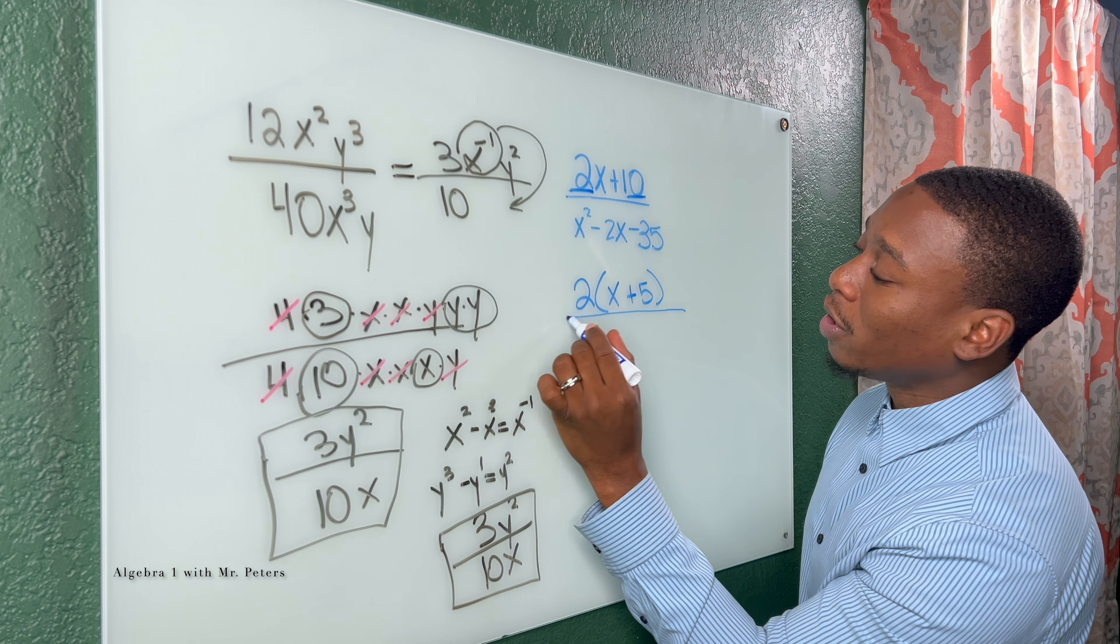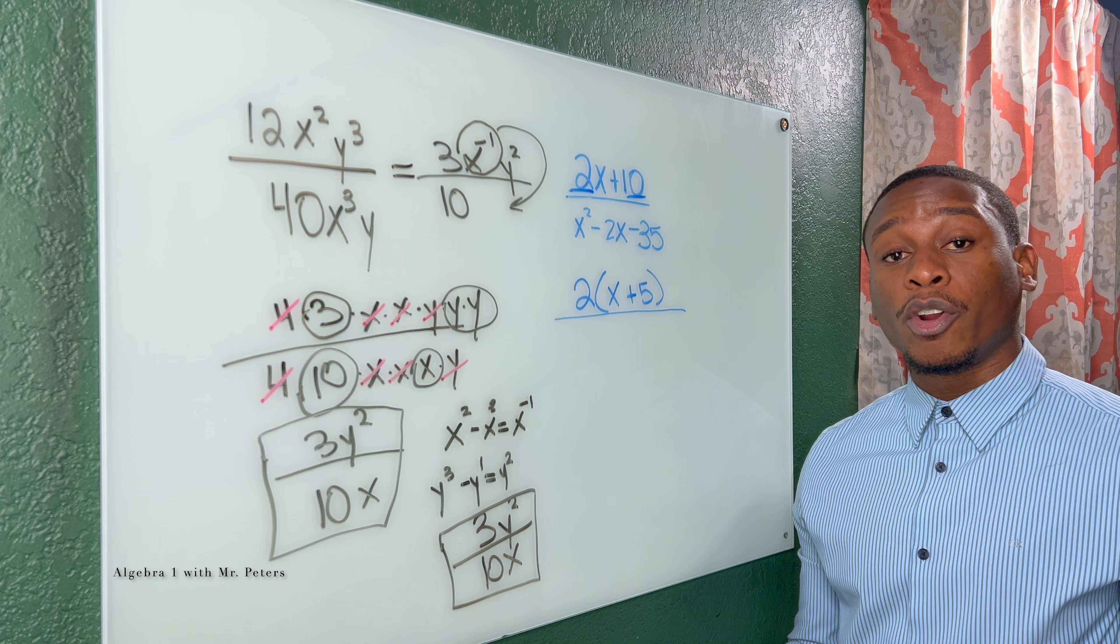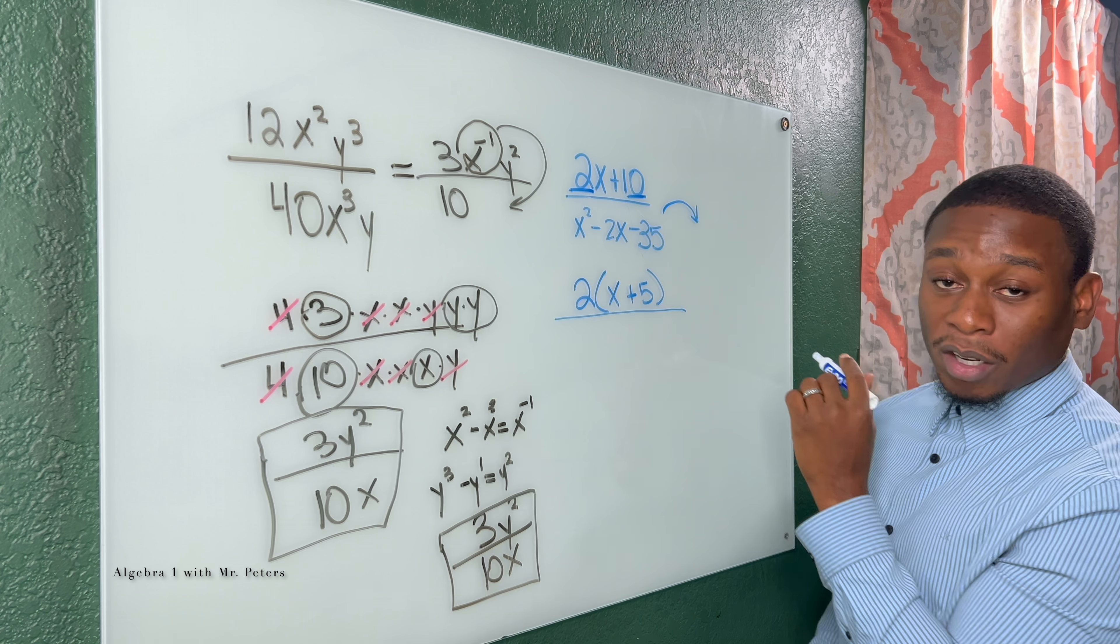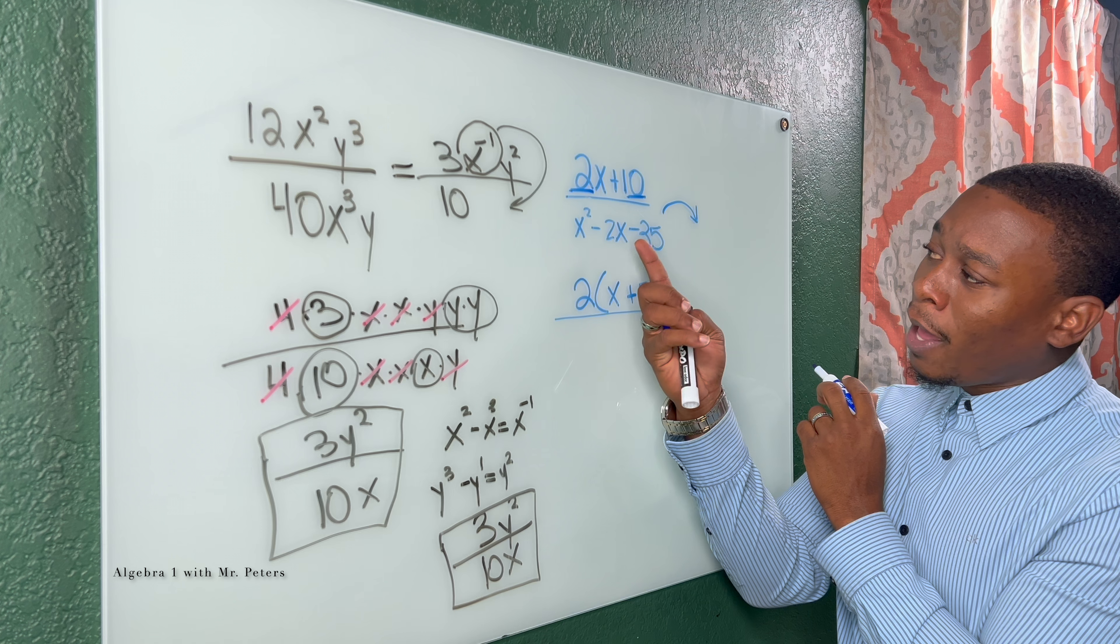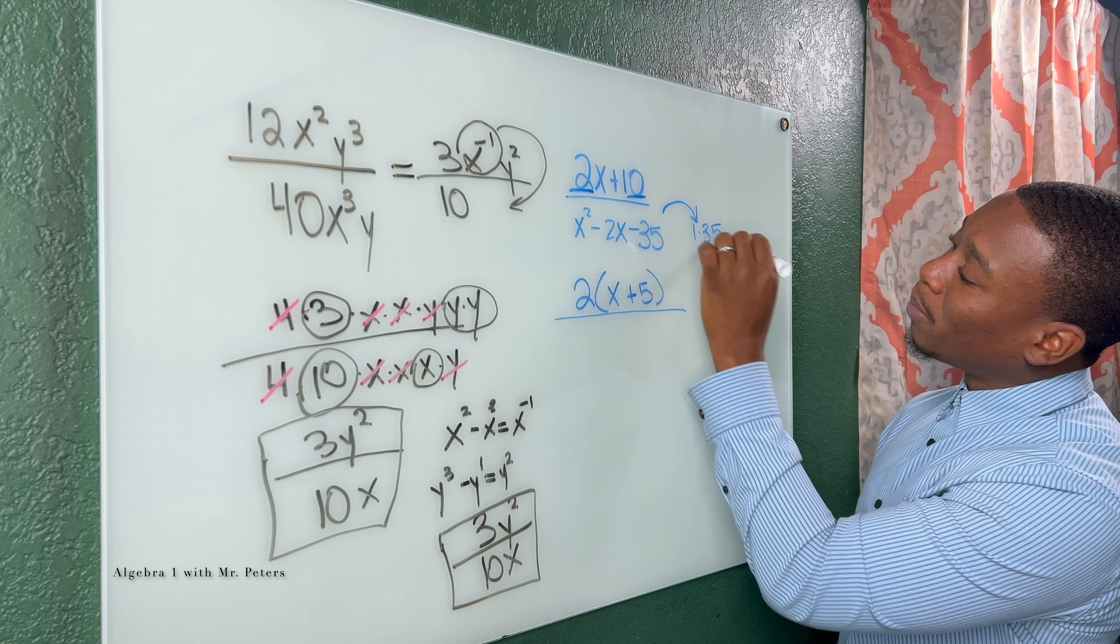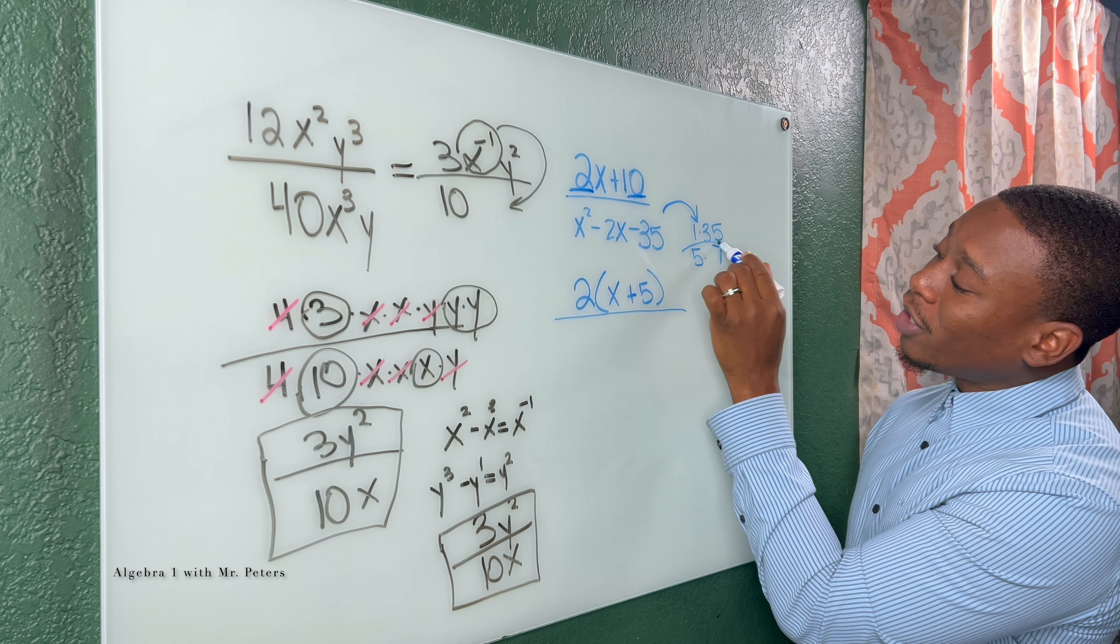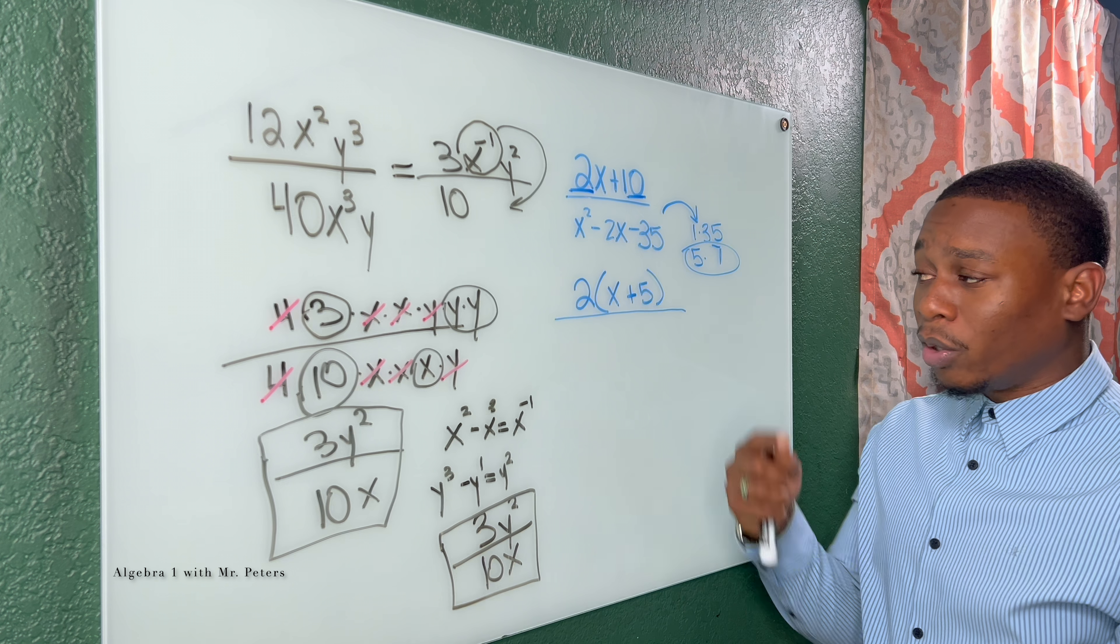2 is on the outside, it's going to stay there. Then on the bottom, we're using regular trinomial factoring rules, meaning it's going to multiply to 35, add to negative 2. So the factors of 35 are 1 times 35, 5 times 7. We know this is the only combination that could give us a negative 2 in the middle.